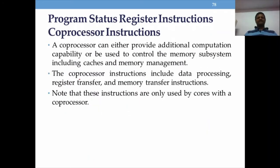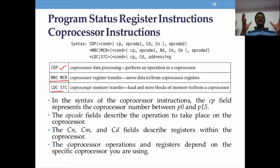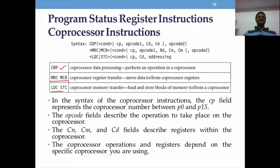The coprocessor instructions are used for mathematical or floating-point operations. Three key instructions are: CDP (coprocessor data processing) for operations within the coprocessor; MRC and MCR for transferring data between ARM registers and coprocessor registers; and LDC and STC for memory transfer between coprocessor and memory. Wherever 'C' appears in the mnemonic, it indicates coprocessor operation.